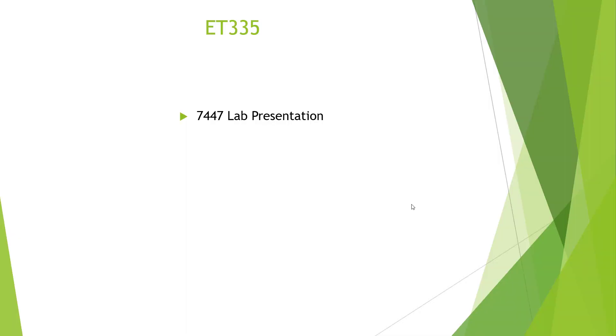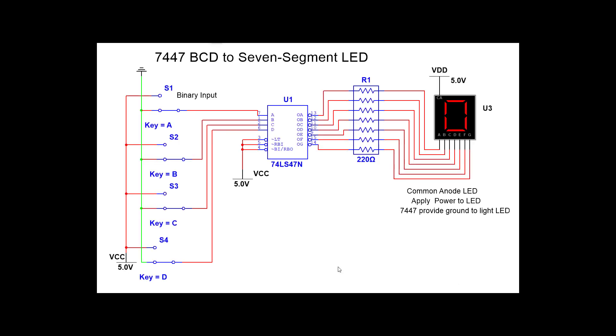Welcome to the ET335 7447 lab presentation. Here's the lecture presentation on the 7447 BCD to 7 segment LED. BCD means binary coded decimal. We're going to use a 4-bit number from 0 to 9 and this device is going to decode it and display on the 7 segment.